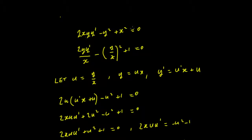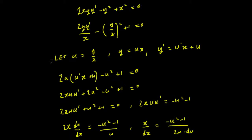Let's look at this example. We have the differential equation 2xy·y' minus y² plus x equals 0. If we divide through by x², we get 2y·y'/x minus (y/x)² plus 1 equals 0. Now we're going to use substitution to change this equation slightly so that we can then use separation of variables. We'll use the substitution u equals y upon x.